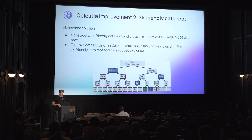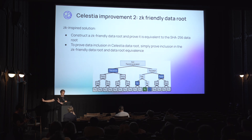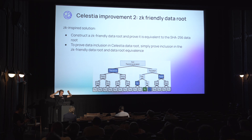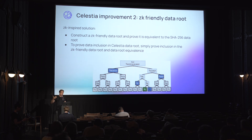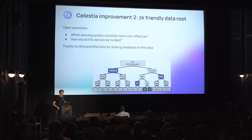The ZK-inspired solution is to use the normal Celestia SHA-256 data root and sample over that one, then in parallel build a ZK-friendly data root using something like Poseidon or Pedersen, and generate a ZK proof that if you take the same block data and Merkleize it, those two roots are committing to the same block data — so they're equivalent. As a ZK rollup, you can prove that the data you're committing to was included in the ZK-friendly root, and then verify that the ZK-friendly root is equivalent to the normal Celestia data root that was sampled.